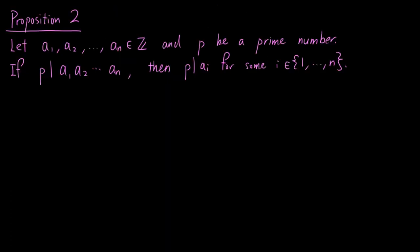The second proposition that we need to prove is a generalization of the first one. We let a1, a2 up to an be integers and p be a prime number. If p divides the product of a1, a2 up to an, then p divides ai for some i in the set 1 to n.